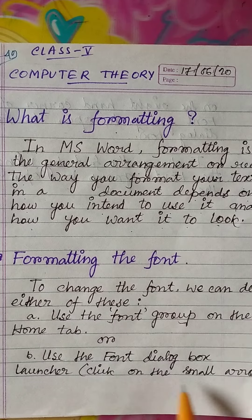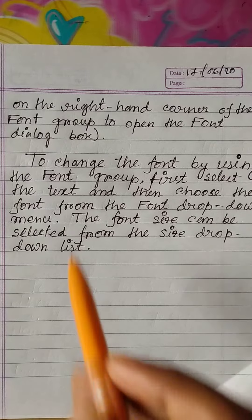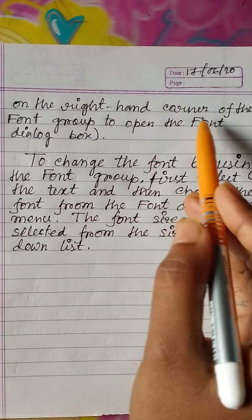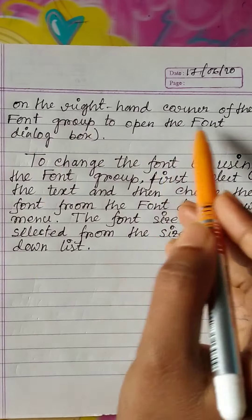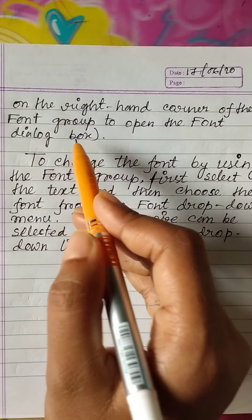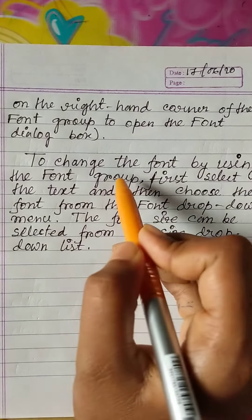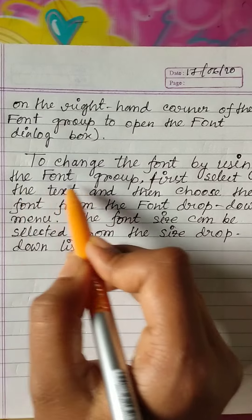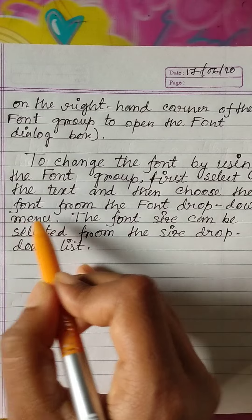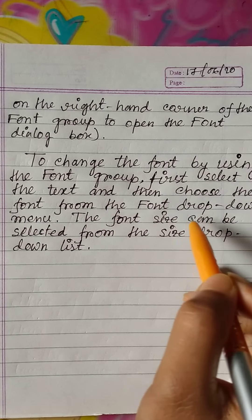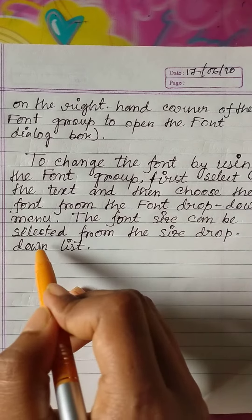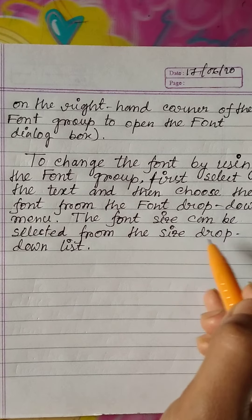Click on the small arrow on the right-hand corner of the Font group to open the Font dialog box. To change the font using the Font group, first select the text and then choose the font from the font drop-down menu. The font size can be selected from the size drop-down list.